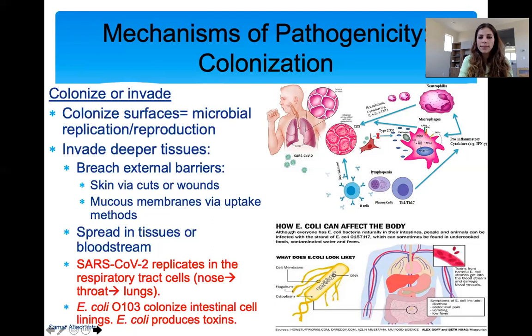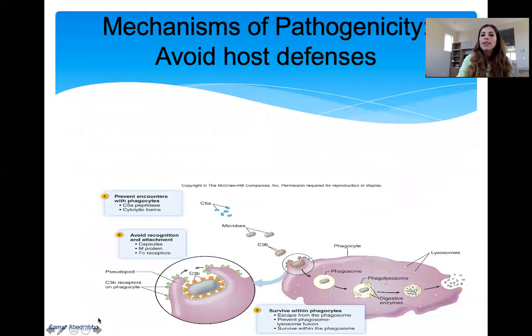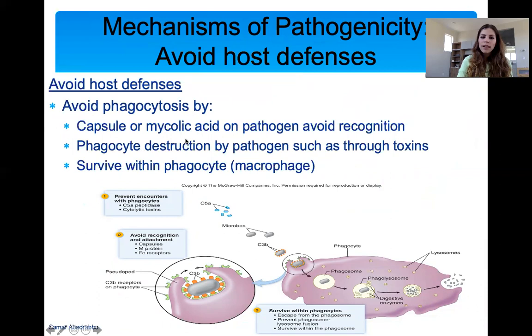So they've entered, they've adhered, they've colonized. Now, to make someone sick, they still have to evade host immune responses. If the immune system is able to eat them up or kill them through inflammation or fever, then they're not an efficient pathogen. Pathogens have to avoid host defenses — they can avoid phagocytosis in many different ways. Unfortunately, many microbes have come up with elaborate ways to avoid being phagocytosed by our white blood cells.